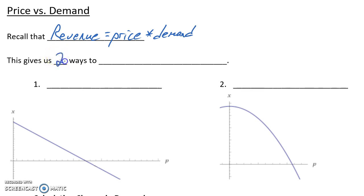So we have two ways to increase revenue. Since revenue is directly proportional to both price and demand, our revenue would increase if we can increase our price or if we can increase demand.